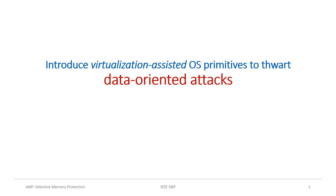Today, we are going to talk about how we have used virtualization extensions to assist primitives inside operating systems to thwart data-oriented attacks. We would like to highlight that even though we employ the system's virtualization extensions, we do not explicitly use or need a fully-fledged virtual machine monitor to protect the operating system. Instead, our operating system primitives directly utilize the system's virtualization extensions to enhance selected components with the ability to defend against data-oriented attacks.